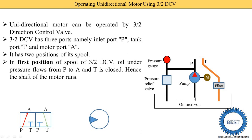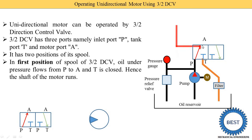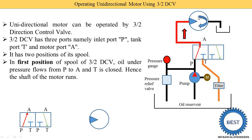Here you see the oil reservoir. This pipe takes oil from the reservoir and supplies it to the pump, which increases the pressure of the oil. Here is the P port, along with a pressure gauge, pressure relief valve, and from the T port the oil is again supplied back to the oil reservoir. The 3 by 2 directional control valve is placed here in the first position, so the first square is connected. Oil comes from the P port and goes to the A port, then through a pipe connection oil is supplied to the unidirectional motor. The motor symbol has the apex of the triangle inside — unlike the pump where the apex is on the periphery. That is the difference between pump and motor symbols. Here you see the motor is rotating in the clockwise direction.